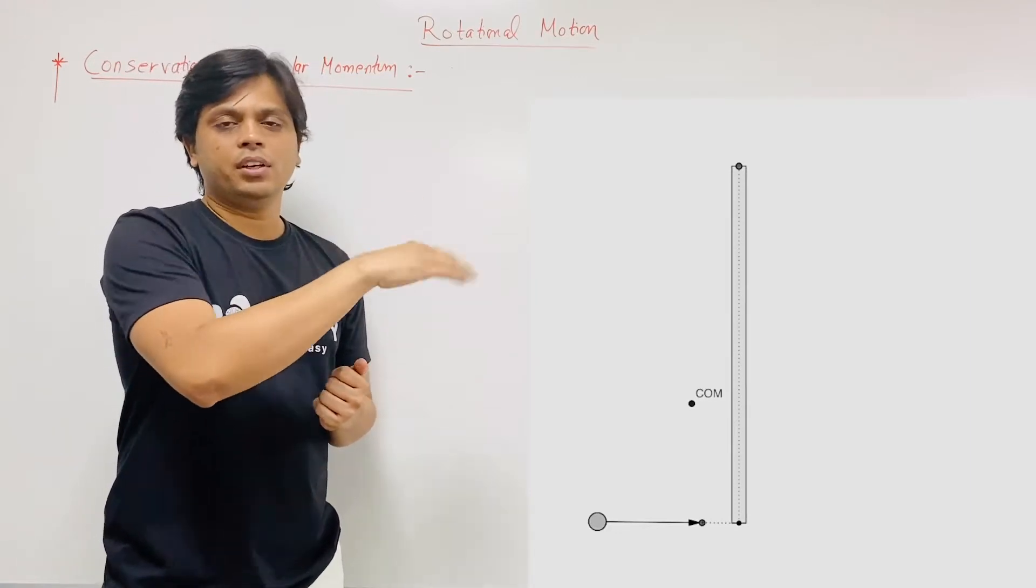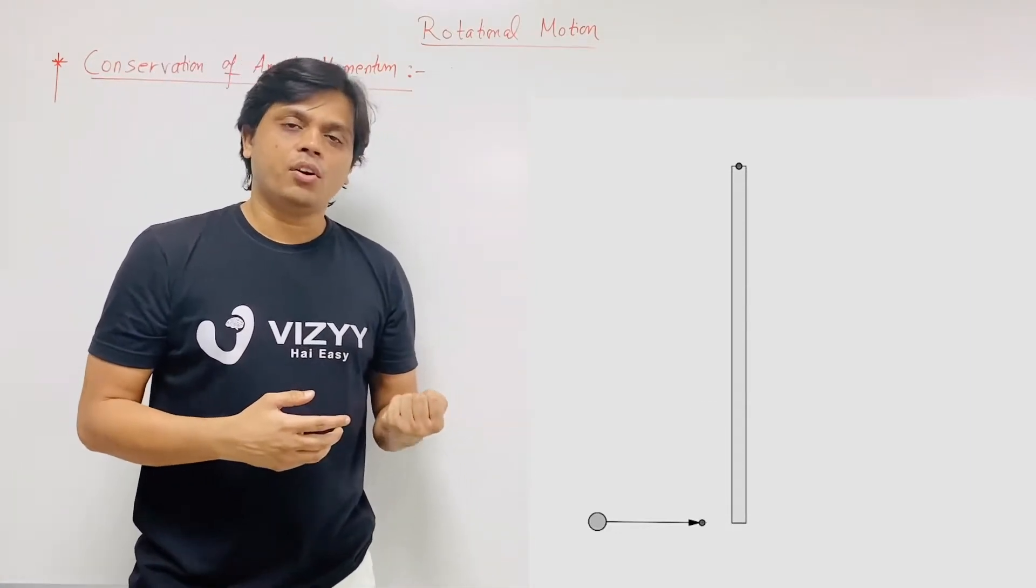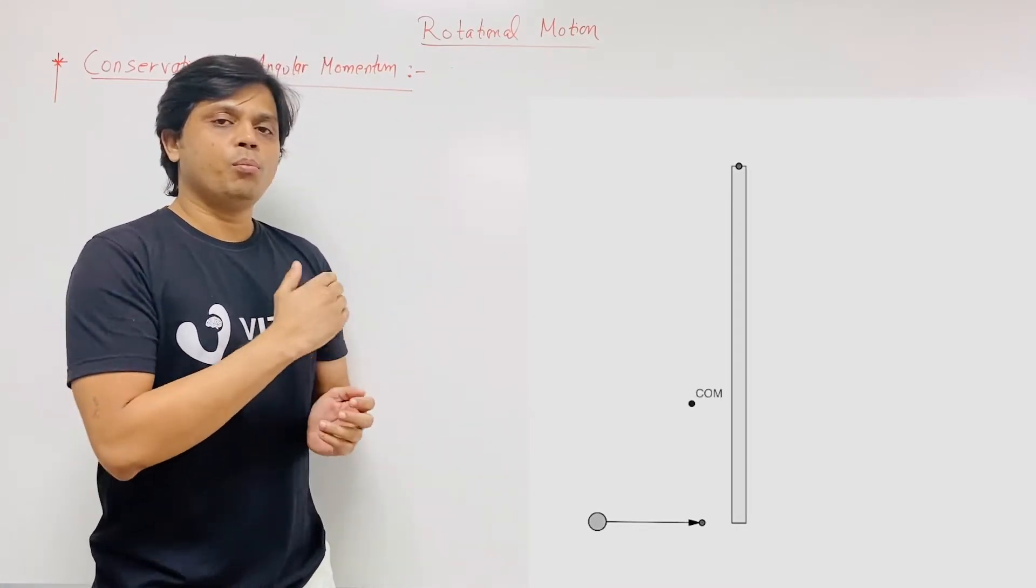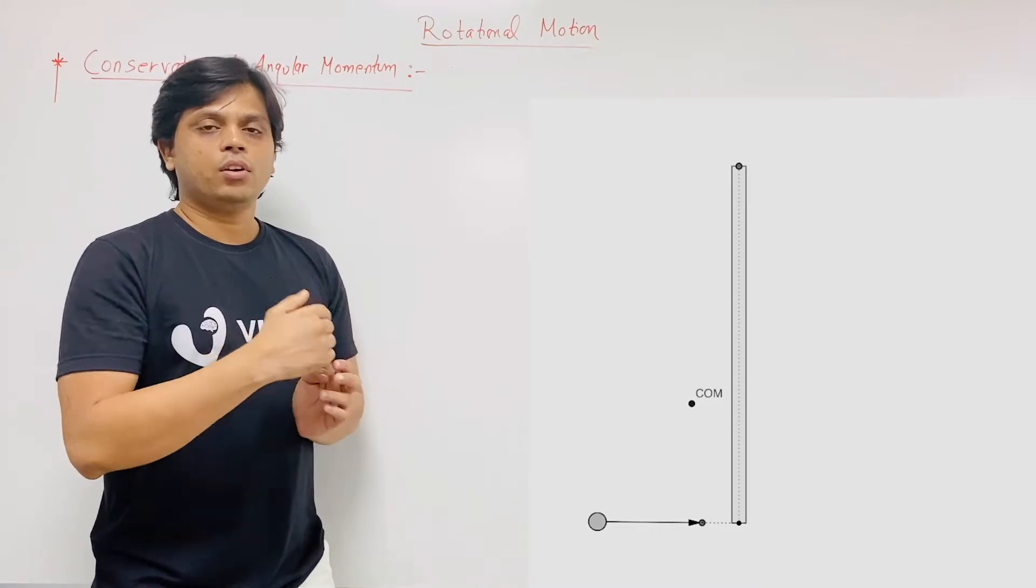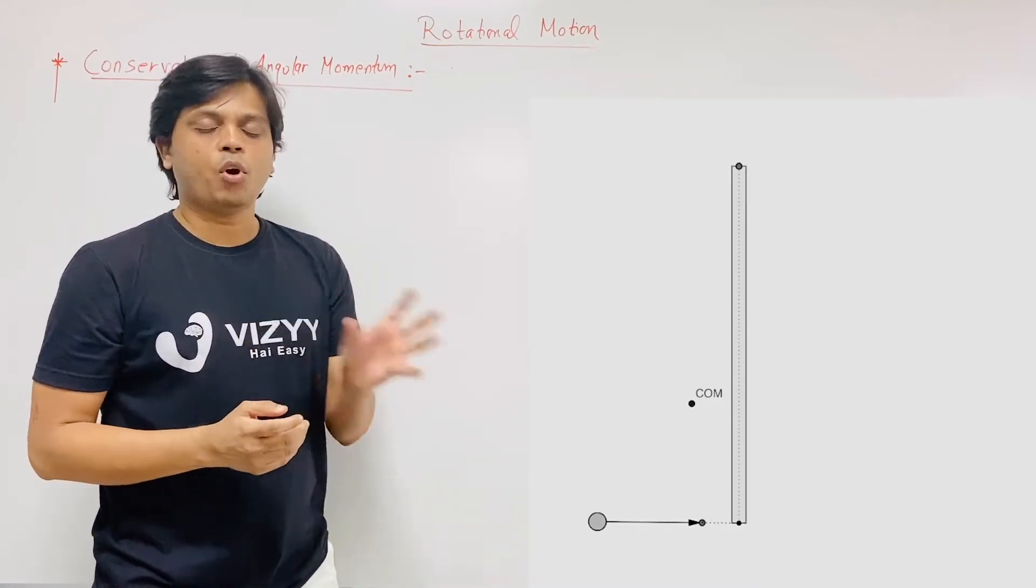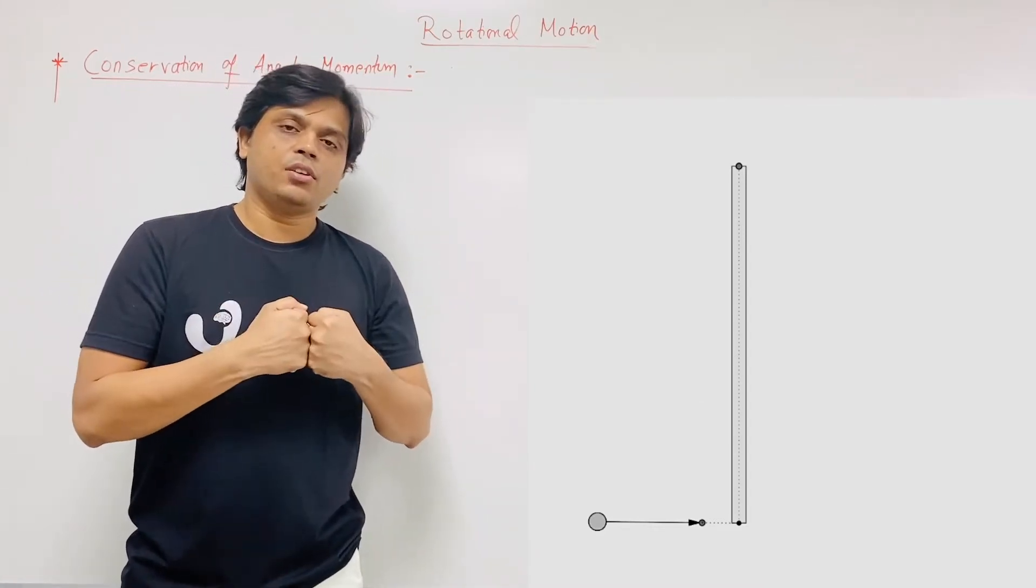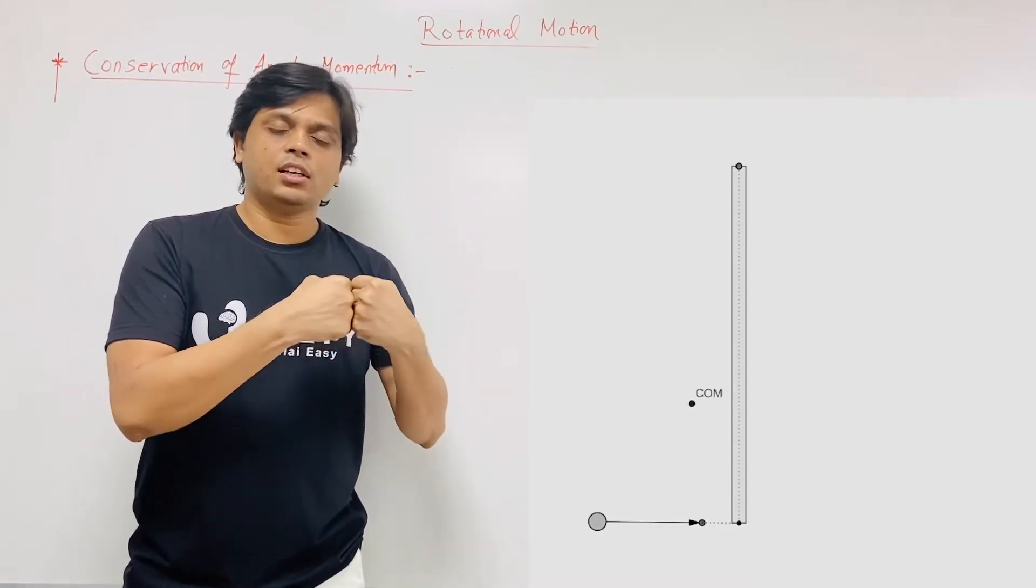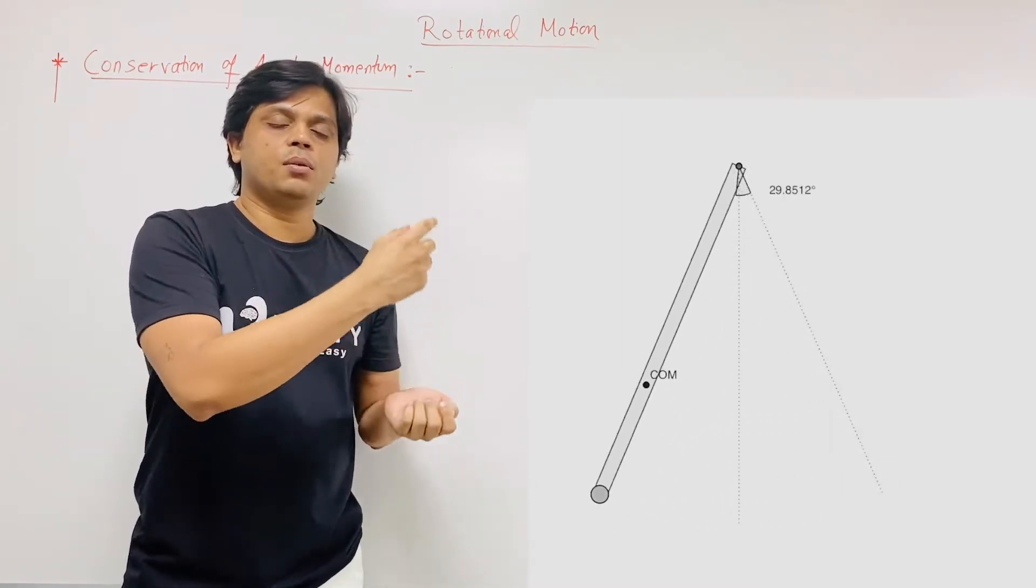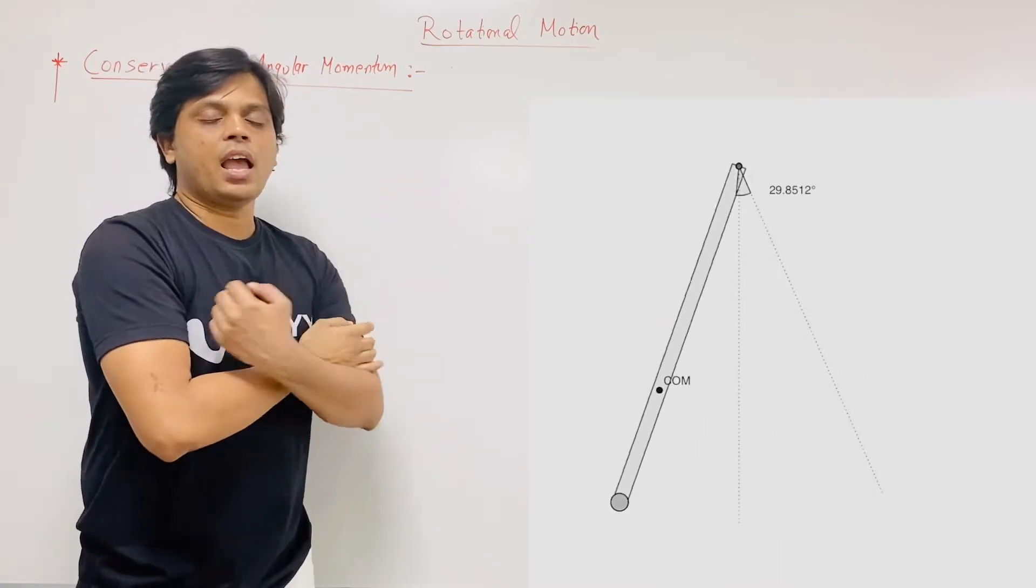We have fixed this rod at one end and now when ball will hit this rod then rod will start oscillating, means it will start rotating. Initially that rod is at rest, so omega of rod is zero. But when ball will hit this rod then it makes a perfectly elastic collision with rod. So what is the final angular velocity of the system? Because now rod is going to start oscillating, so it will have an angular velocity.